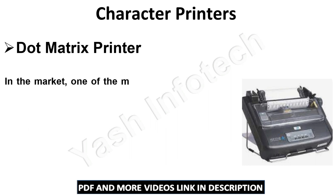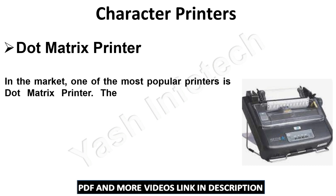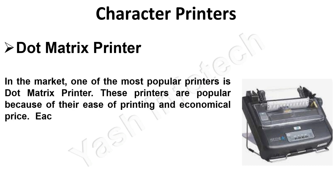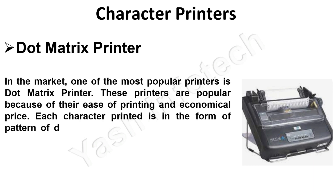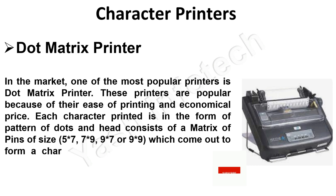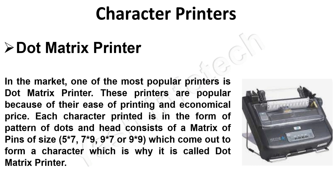In the market, one of the most popular printers is the dot matrix printer. These printers are popular because of their ease of printing and economical price. Each character printed is in the form of a pattern of dots, and the head consists of a matrix of pins of size 5x7, 7x9, 9x7, or 9x9, which come out to form a character — which is why it is called a dot matrix printer.